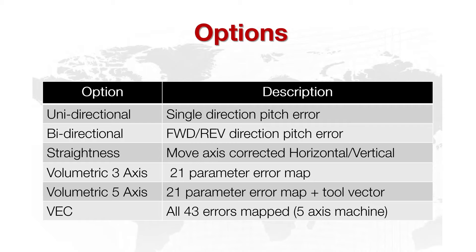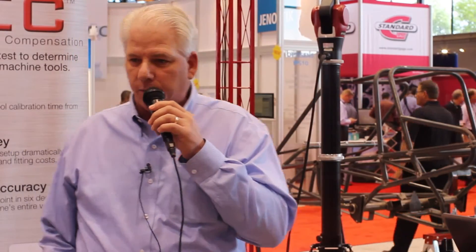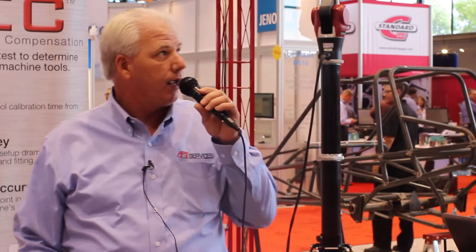The five-axis option maps the 21 parameter errors plus the tool vector corrections, utilizing the rotary to correct for the tool vector. And then we have RVEC, which corrects for all 43 possible errors on a five-axis machine tool. One of the key enhancements is bidirectional straightness compensation, which is most commonly found on controllers today.